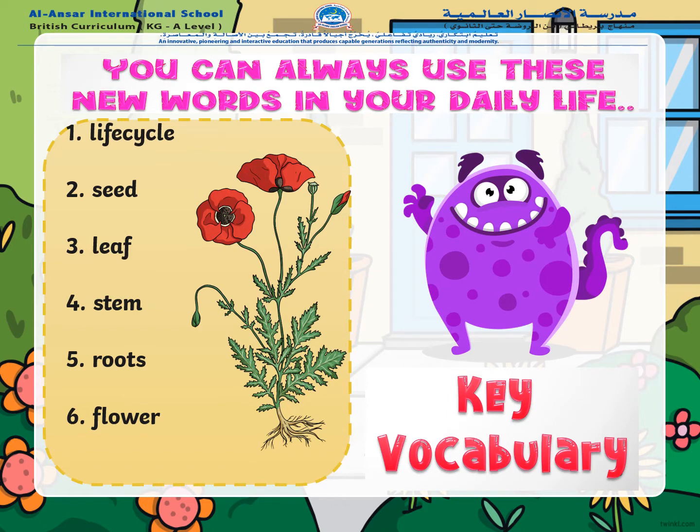These are your keywords. Number one: life cycle — we will be discussing the life cycle of a plant. Number two: seeds. Number three: leaf. Number four: stem. Number five: roots. Number six: flower. All of these are different parts of a plant.